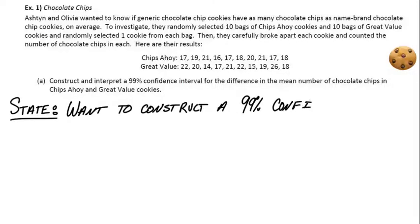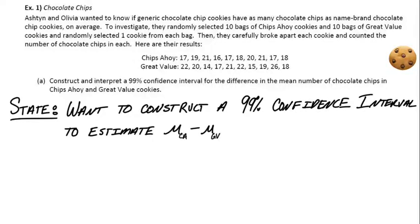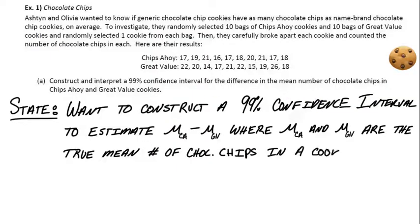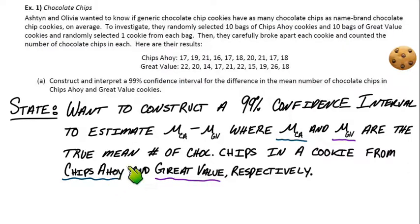Okay, so confidence intervals use the same four-part grading rubric as significance tests. Let's start with the state step. So let's state what we're actually going to do. We want to construct a 99% confidence interval which is going to allow us to estimate the true value for this. Mu with a little C-A for Chips Ahoy minus Mu with a little G-V for Great Value. And so we just need to say what these values represent in context. So Mu C-A and Mu G-V would be the true mean number of chocolate chips in a cookie from Chips Ahoy and Great Value respectively. So we gave the confidence interval with 99% the confidence level how confident we want to be. We gave the parameter Mu C-A minus Mu G-V and we defined both of those in context.